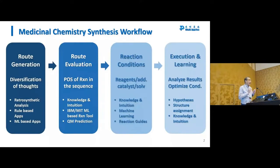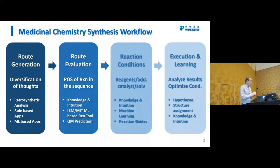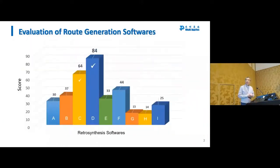In medicinal synthesis we can artificially divide it into four stages: route generation, route evaluation, the reagents and conditions we choose to run the reaction, then running the reaction and seeing what we learn. For route generation, our chemists are very experienced. On top of their own retrosynthetic analysis, we look into web-based and machine-based software to see whether we can digest it for consideration.